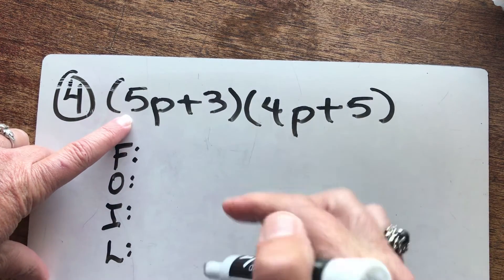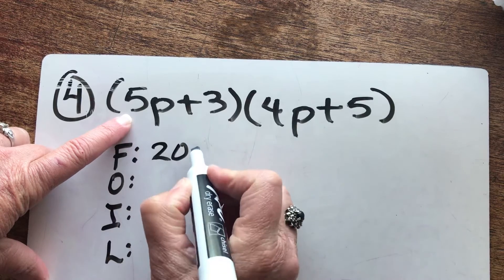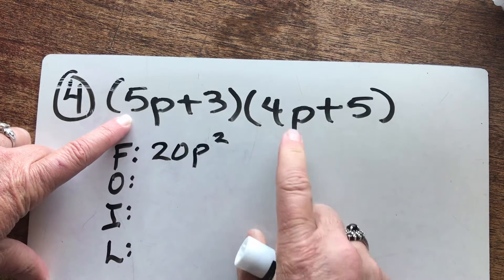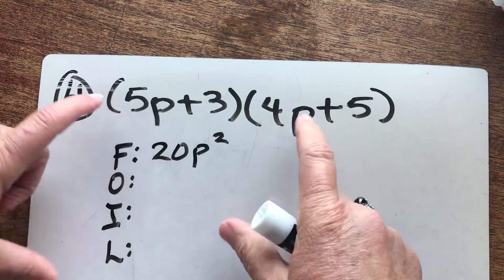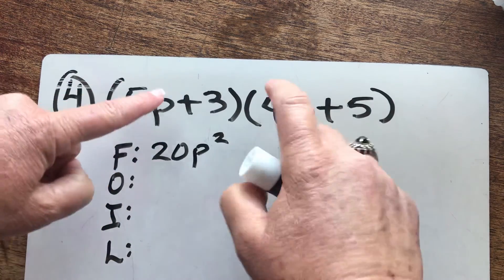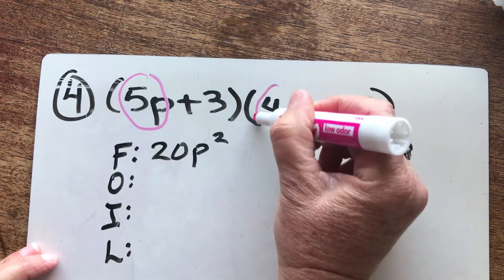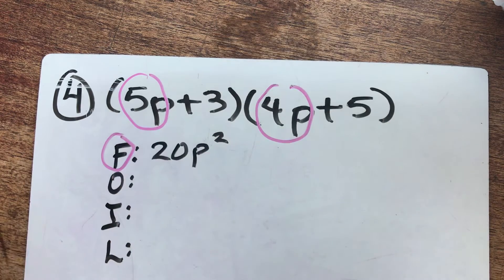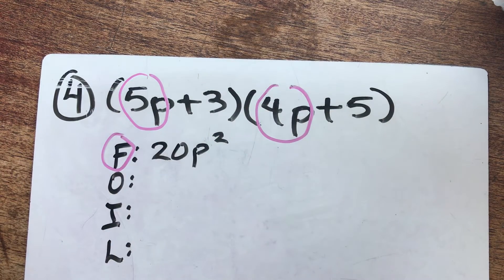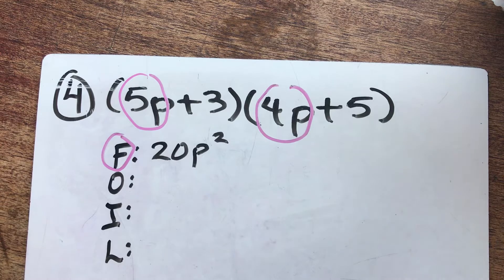We have five times four is 20, and it's going to be 20 P squared. Again, F stands for front. These front terms. Front terms. I'm multiplying these two guys. That's my front. So I get my 20 P squared.